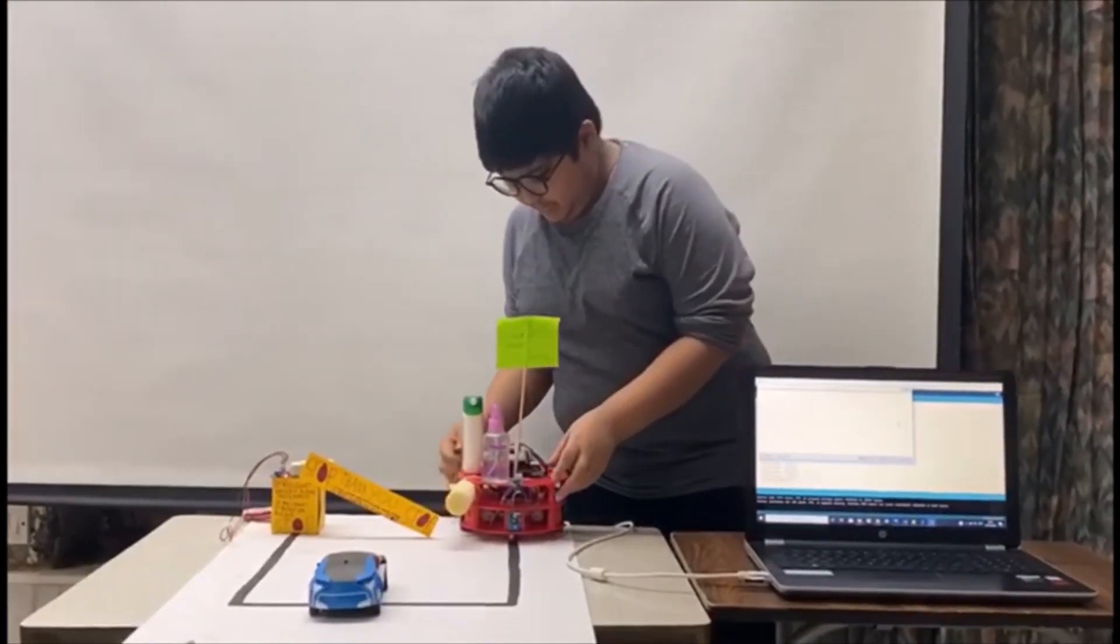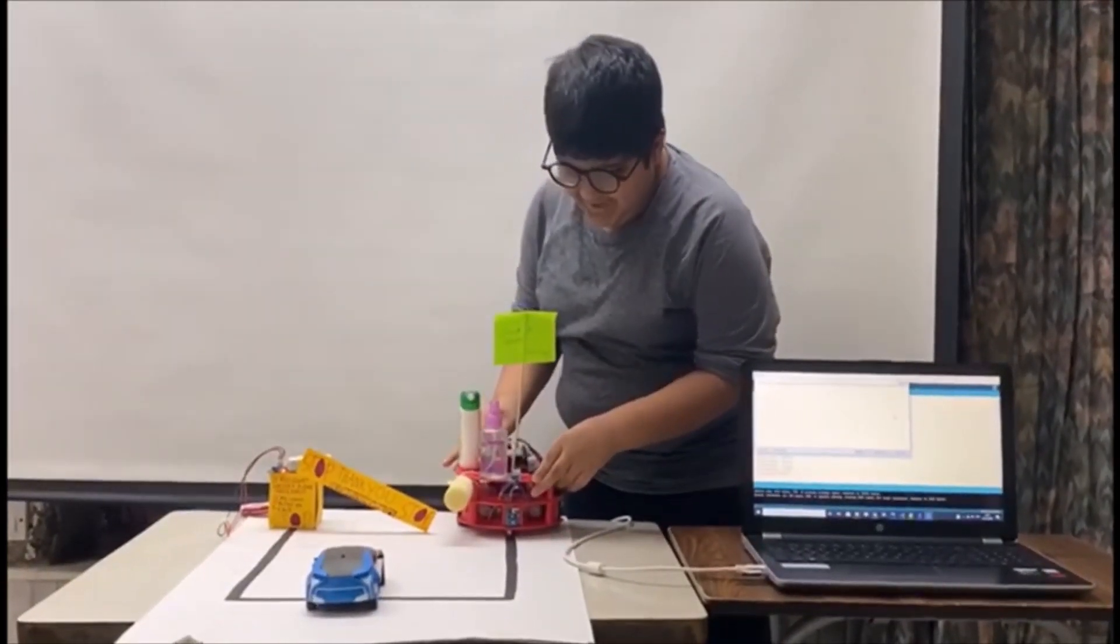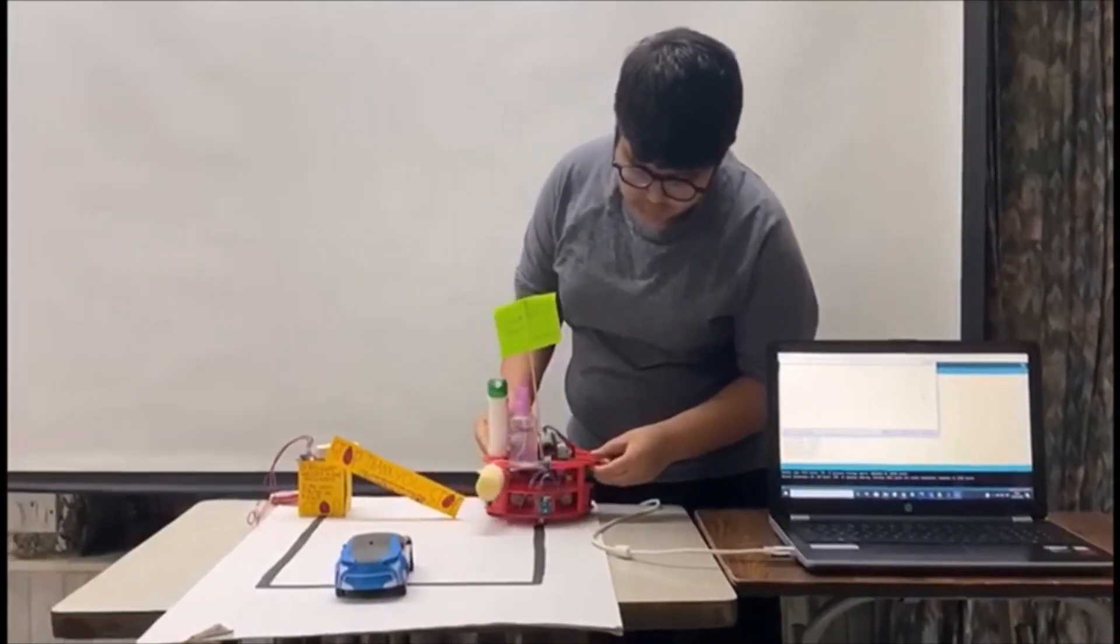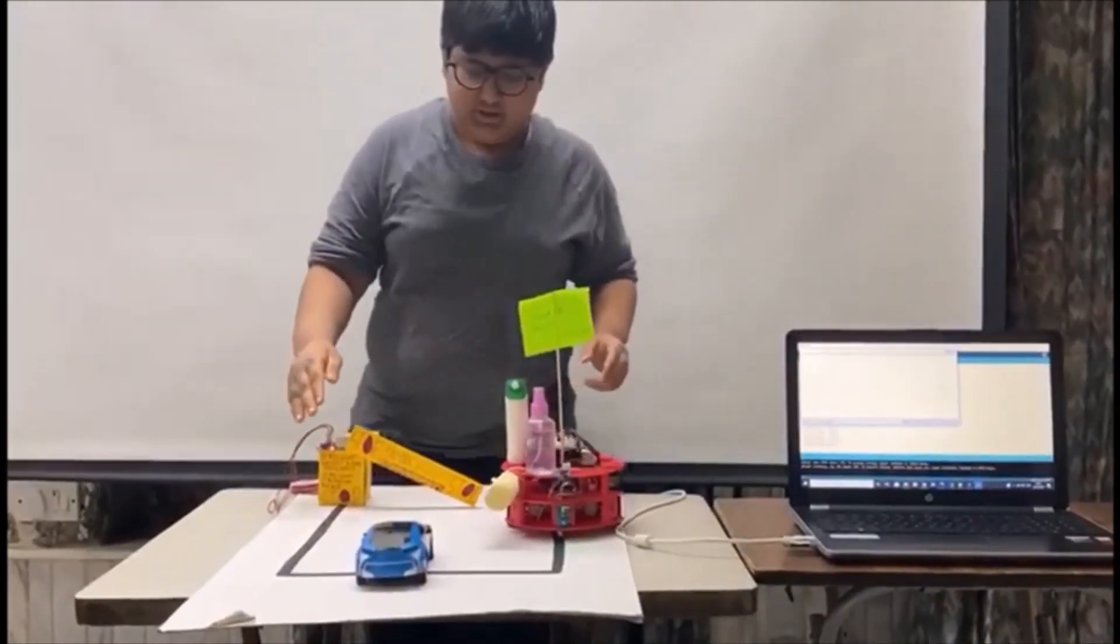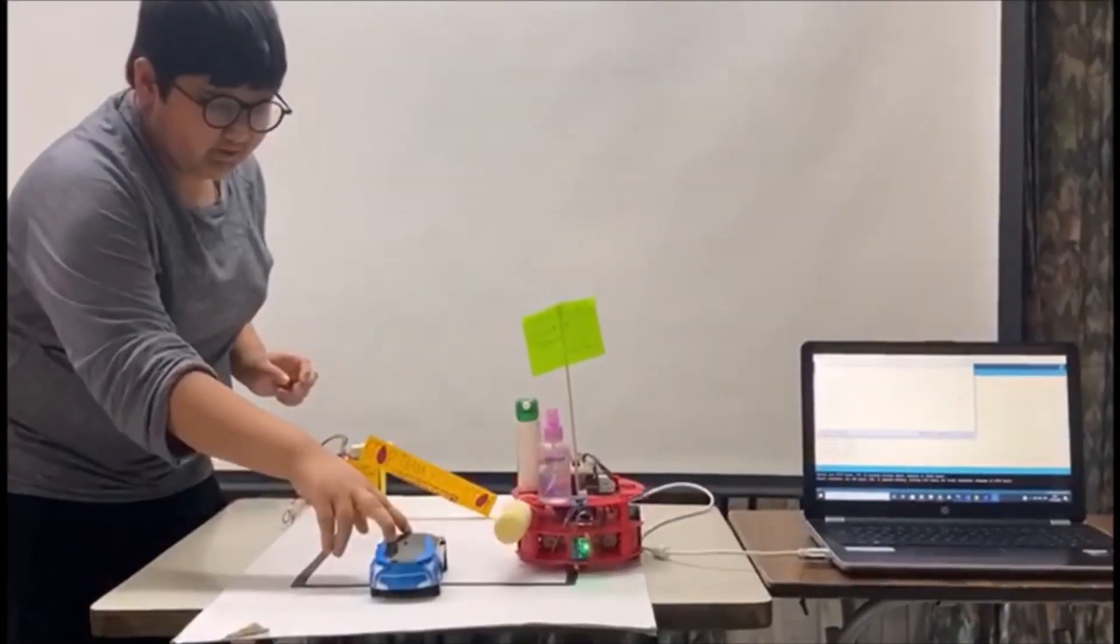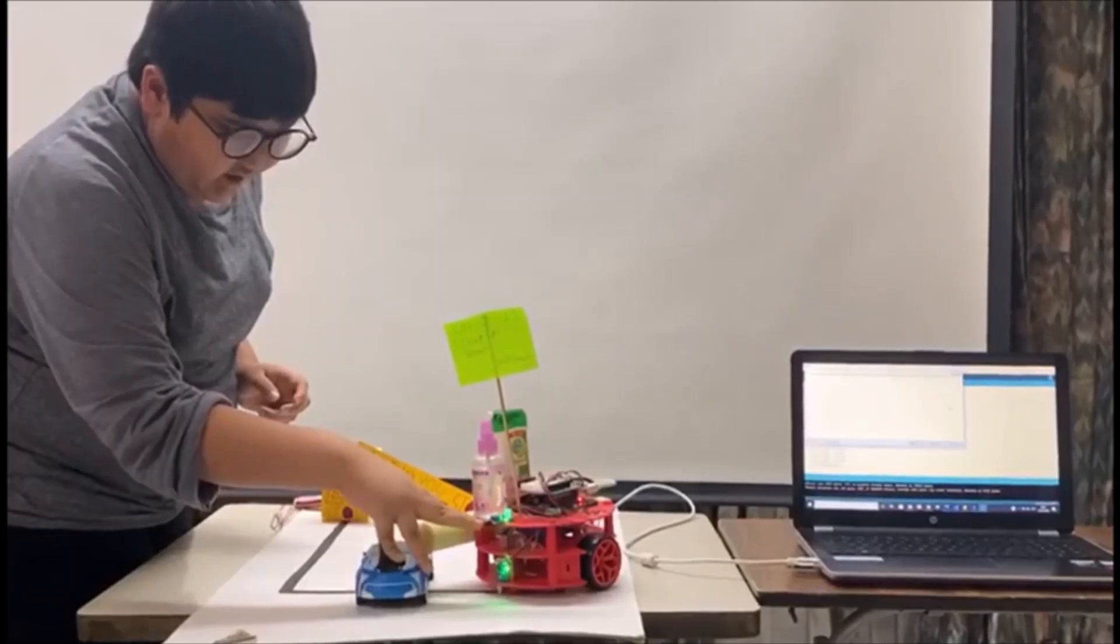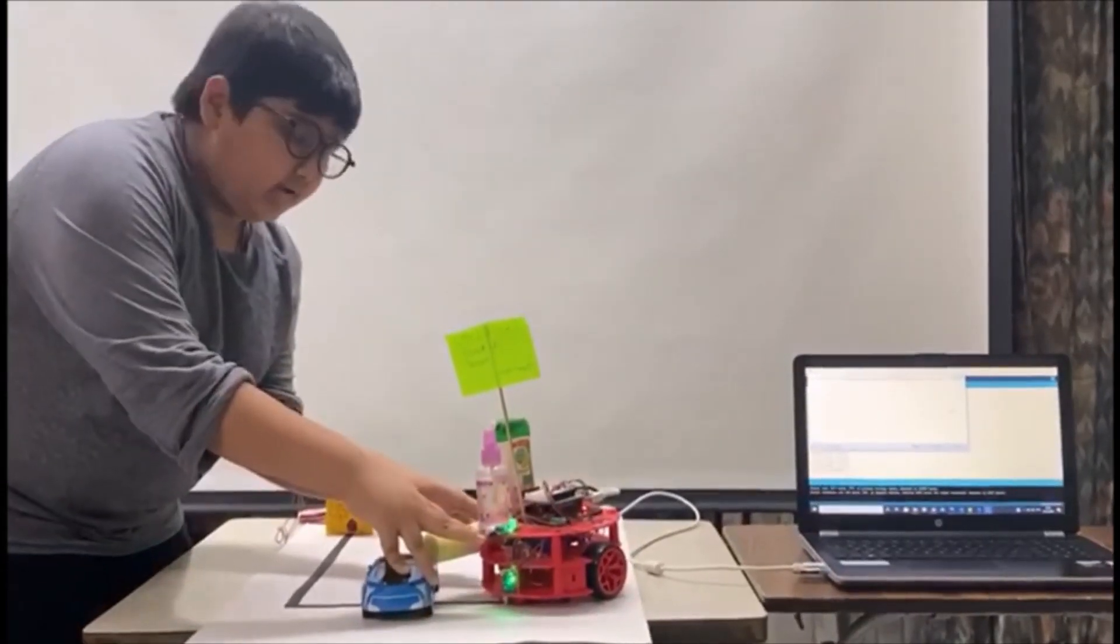This is how it works. My robot would follow the black line and would reach here. And this IR sensor would sense the car and my robot would stop.